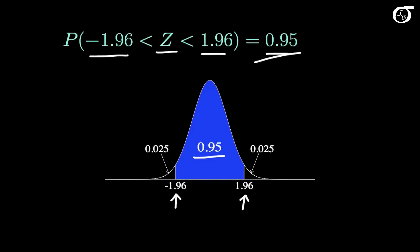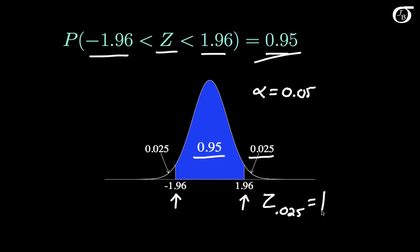As an example, we would say that alpha is 0.05 and alpha over 2 is 0.025. And so z sub alpha over 2, which is 0.025 in this case, is equal to 1.96, because 1.96 has an area of 0.025 to the right.